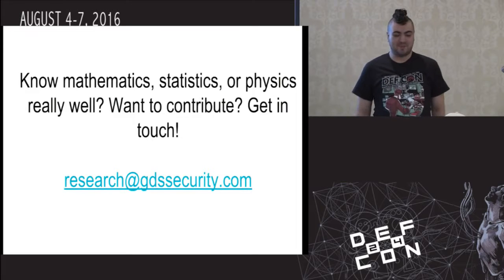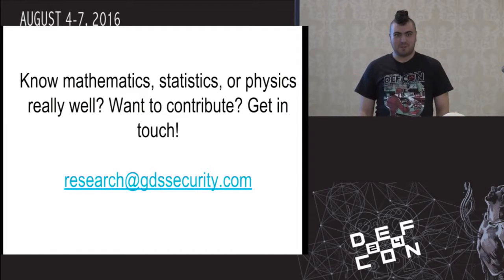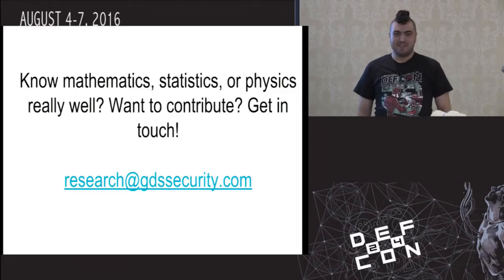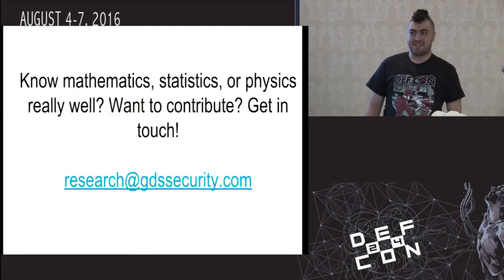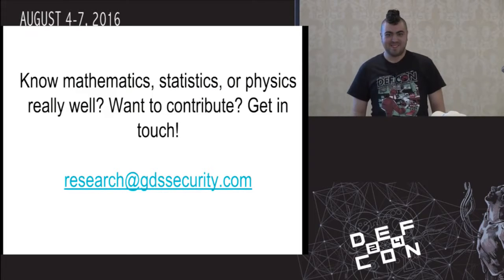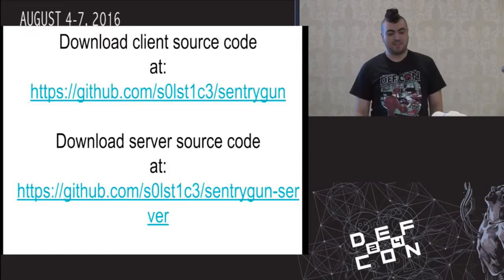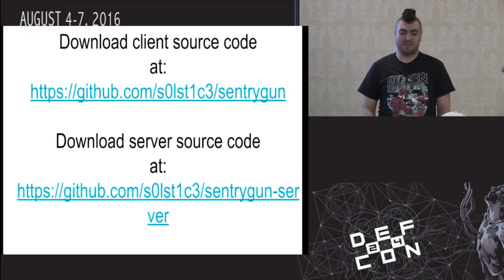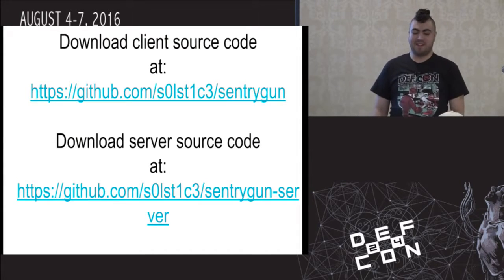If you know math, statistics, or physics really well, that TX signal strength detection we did earlier works pretty well, but it was built using pretty much hacker math. If you want to contribute to this project, feel free to send an email to research at gdssecurity.com, because we'd love to have someone who can do math help with this. If you want to mess around with the source code, it's at github.com/solstice/centurygun. The server that the client things talk to is at solstice/centurygun-server. There will be a readme up there in an hour.